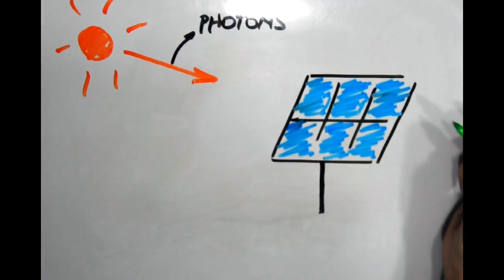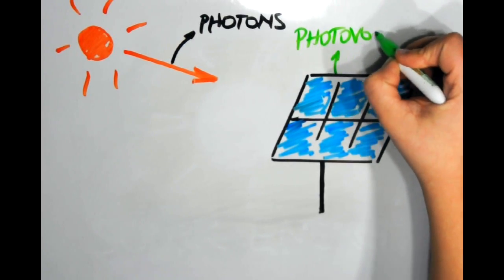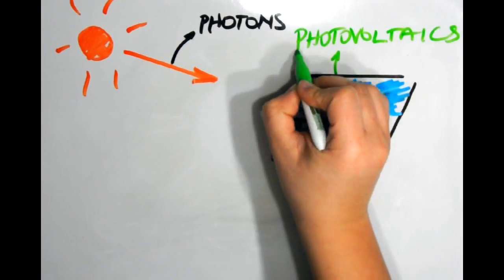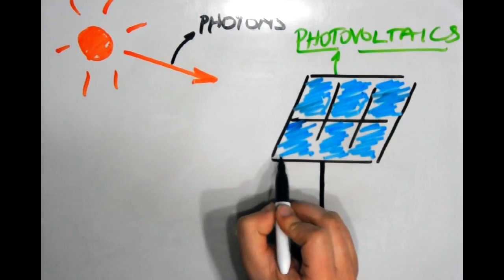This energy absorbed by silicon knocks off electrons out of the atoms, letting ions flow freely. You can think of this like a pool game where the white ball is a photon atom which passes on its energy to the colored balls it strikes.